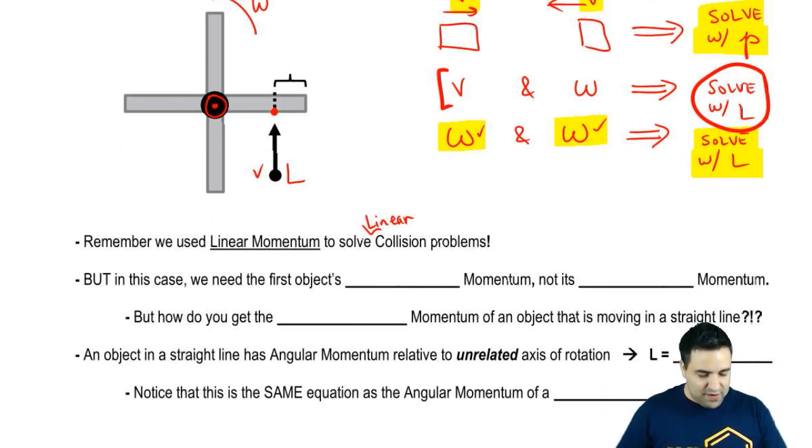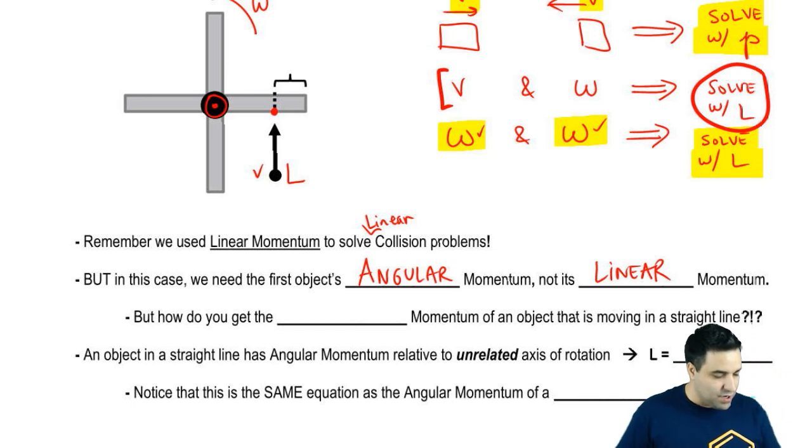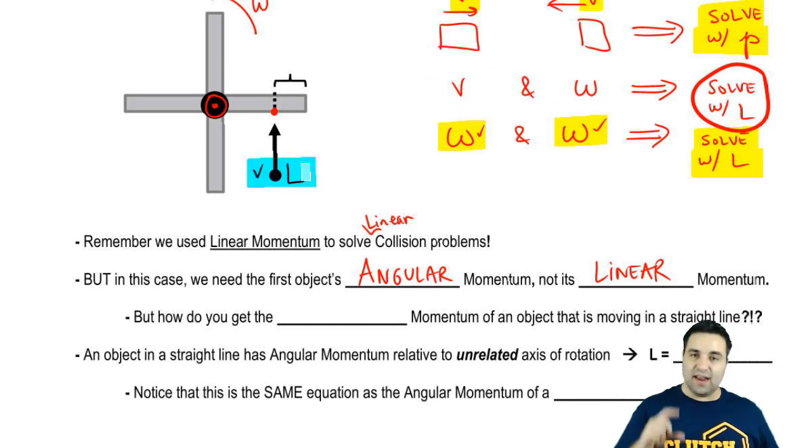When we're trying to figure this out, in this case here, we need to first find the object's angular momentum, L, and not its linear momentum, because of what I just said here. These questions will be solved with L. So I don't care what this guy's P is, I care what L is.